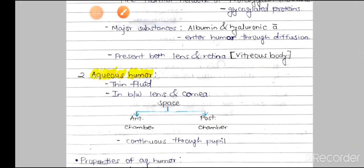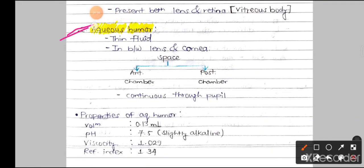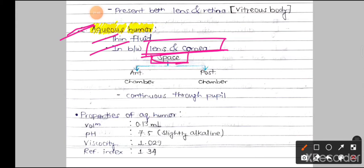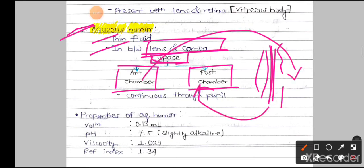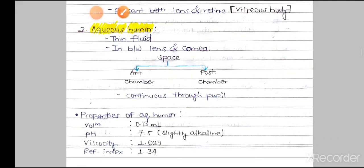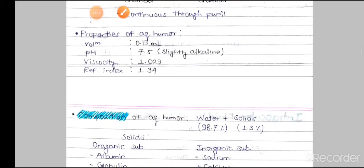The aqueous humor is a thin fluid present between the lens and the cornea. This space is further divided into two chambers: the anterior chamber and the posterior chamber, separated by the iris. The posterior chamber is between the lens and the iris, and the anterior chamber is in front of the iris, between the iris and the cornea.